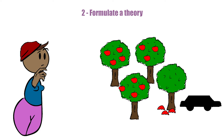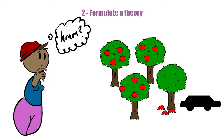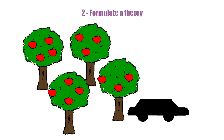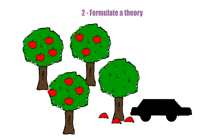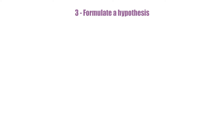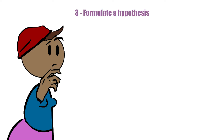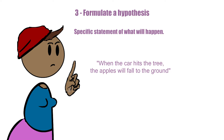Number one, we start with a question. This question usually stems from an observation we make, which leads to us asking why or how it happens. We then formulate a theory by suggesting a possible explanation for the observation we made. Once we have suggested a theory, we then make a prediction or formulate a hypothesis, which must be a specific statement that is testable based upon the theory about what will happen in a test situation.